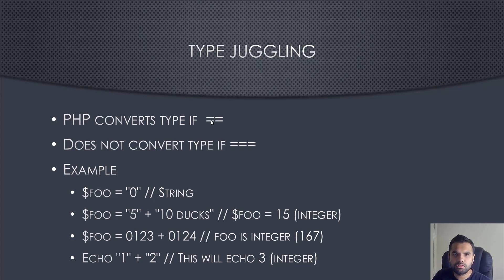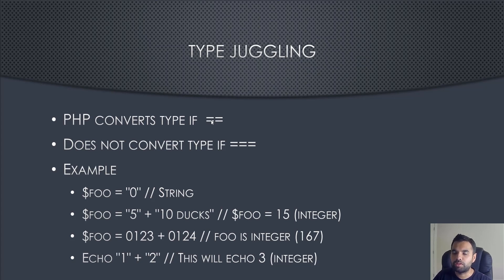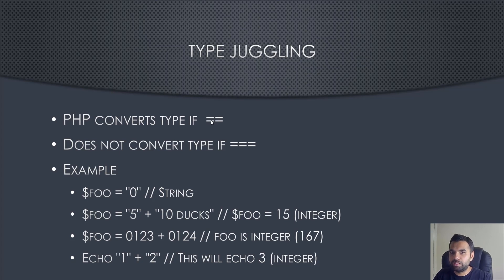There are two ways to do comparisons in PHP. The first is the double equals (==). For example, if you have a string on one side and an integer on the other, comparison is difficult. What PHP will do is convert one of them into an integer and then compare. If you don't want PHP to use its own logic, you can use triple equals (===), which is a strict comparison that will not convert any types.